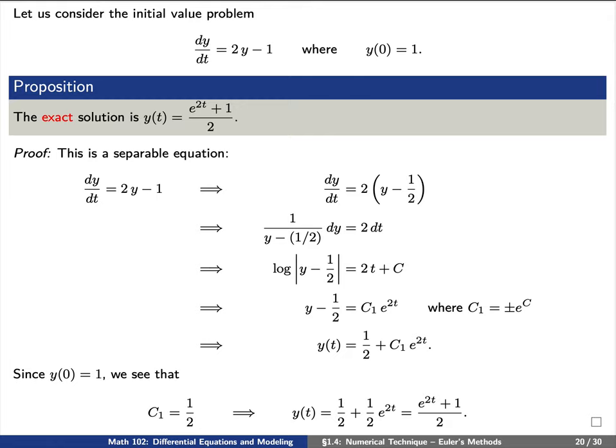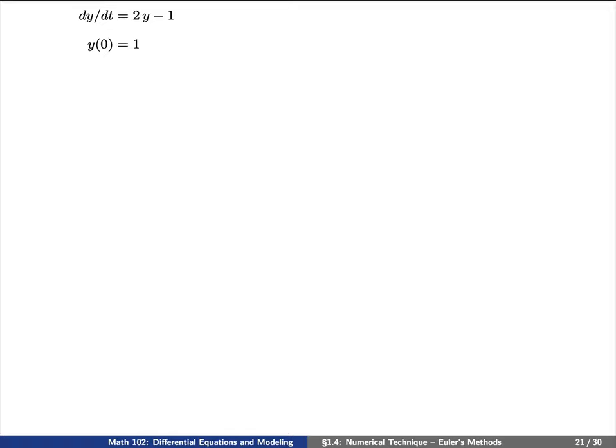We can figure out this constant c sub 1 by remembering that y of 0 equals 1. We find immediately that c1 has to be 1/2 and therefore y of t is exactly the function that we claimed here at the top of your screen.